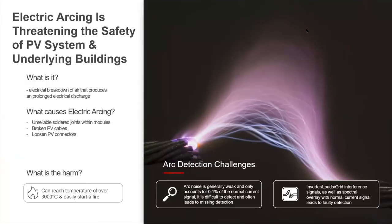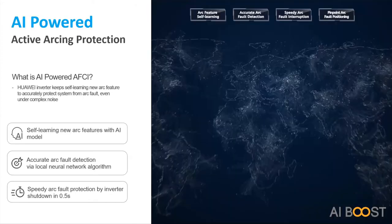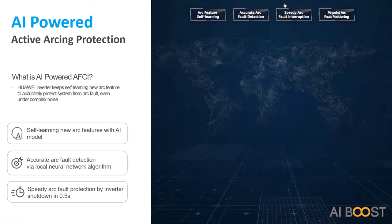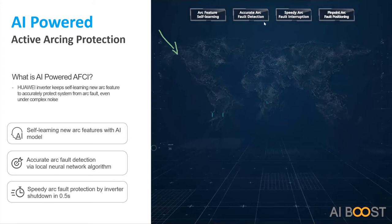In the PV industry, a big challenge is identifying arc faults on the DC side, because they are not self-extinguishing like they are on the AC side. It has been a big challenge to find an efficient way to prevent these arc faults from happening. The Huawei solution to this problem will be exemplified in this slide — I will play a video.